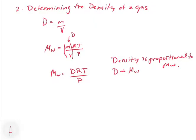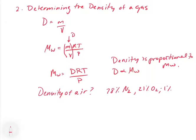An interesting question is: what is the density of air? We might want to know if a gas will rise or sink in air. Air is approximately 78% nitrogen, 21% oxygen, and 1% argon. There are also trace gases like carbon dioxide, neon, helium, and other noble gases, but they are relatively small compared to the argon component.